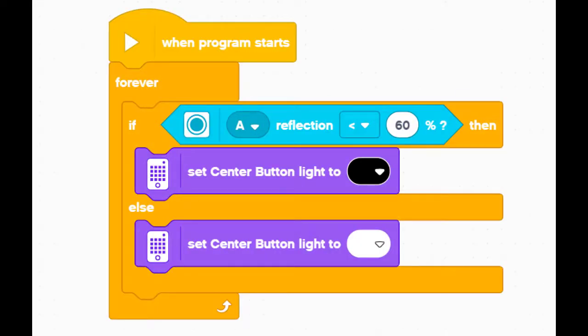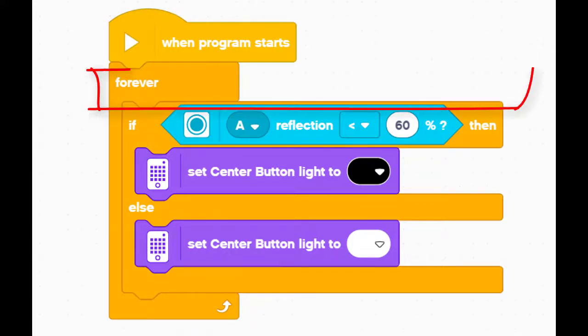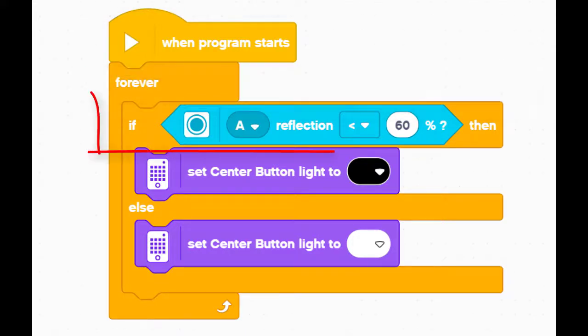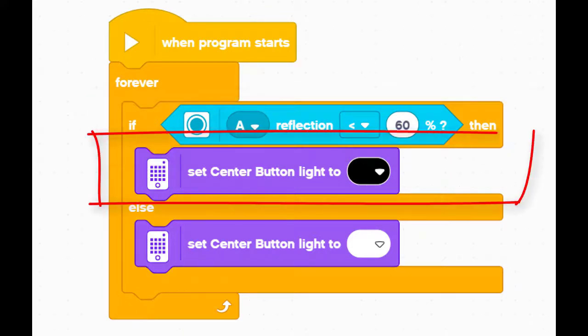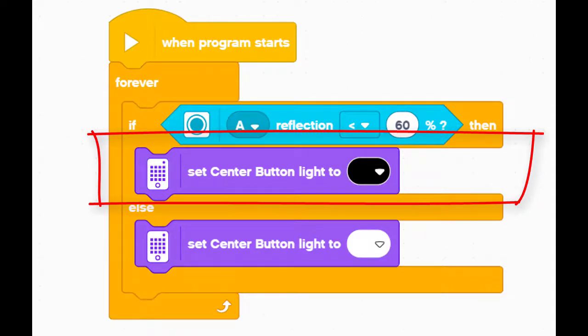Let's read our program. When the program starts, forever repeat the following. If the color sensor connected to port A receives reflected light less than 60%, set the center button light to black, else set the center button light to white.